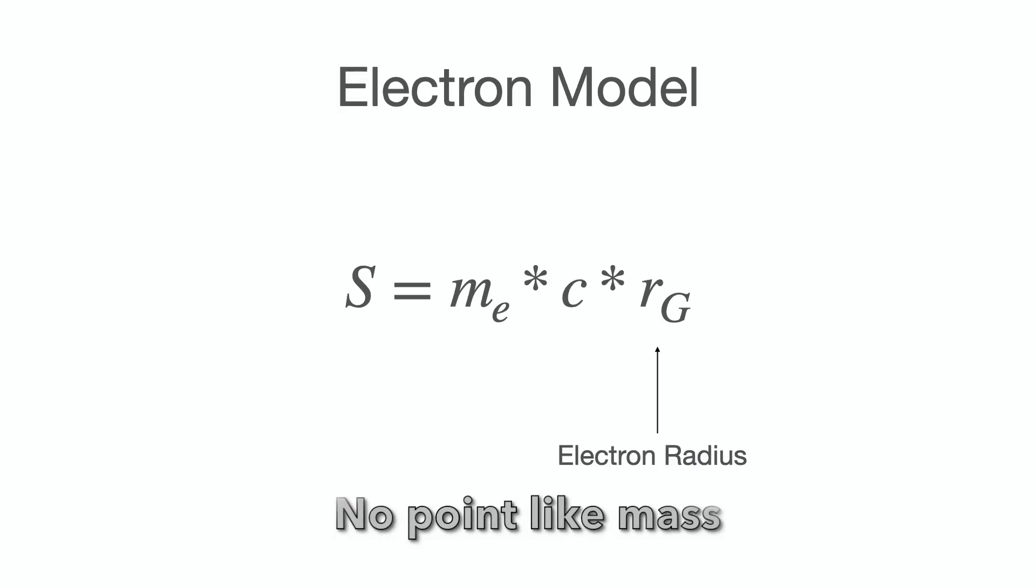Let's assume the opposite. The electron is not a point particle. And the spin is due to rotation of the mass. The spin is an invariant. The same applies to the combination of mass and radius.